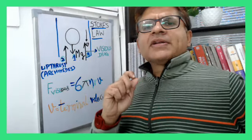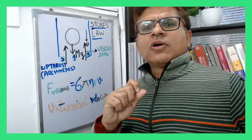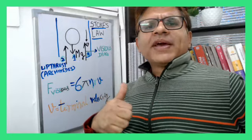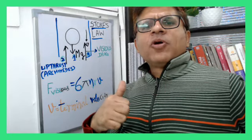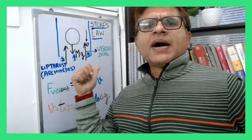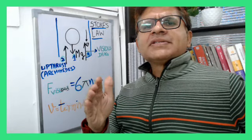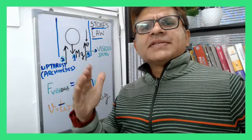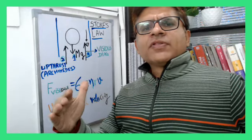You can expect a numerical on Stokes law. You can be expected to find the terminal velocity. You can also be expected to write the free body diagram equation for this mass, where the Archimedes force, which is upthrust, plus the viscous force equals the weight of the body downward.